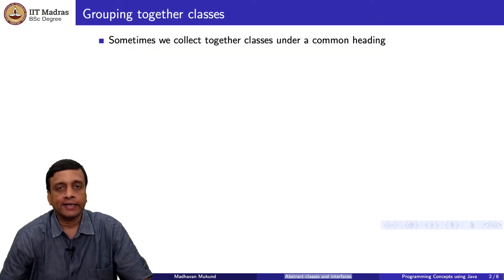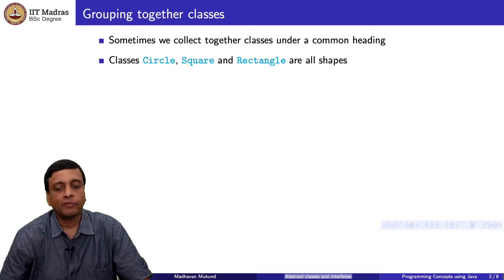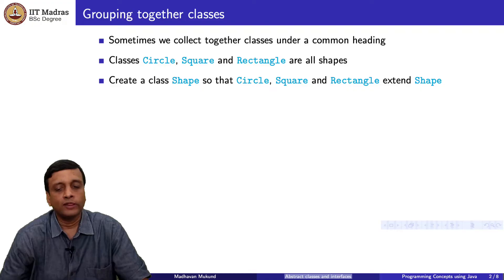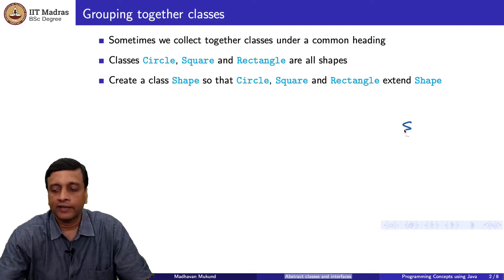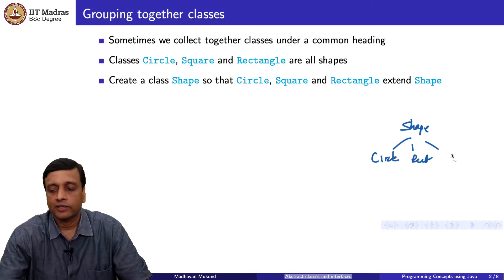The class hierarchy is essentially a way to group together objects of different types into a common whole. For instance, we might have classes which represent geometric shapes like circle, square, and rectangle, and to tie these together we might create a parent class called Shape, so that all three extend that. We could have a hierarchy in which we have Shape and then below that we have Circle, Rectangle, and Square.